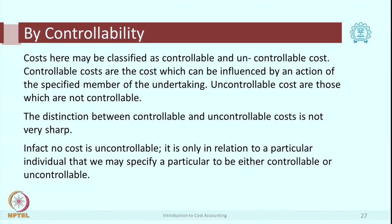There is another way of classifying: classification based on controllability. Controllable costs are those which can be influenced by the action of a specific person. If a factory manager can decide whether to purchase certain categories of mangoes and has authority over certain day-to-day actions, then those costs attributed to his or her decisions are the controllable costs for that level. Rent would mostly be non-controllable, as that decision would have been taken by higher levels.